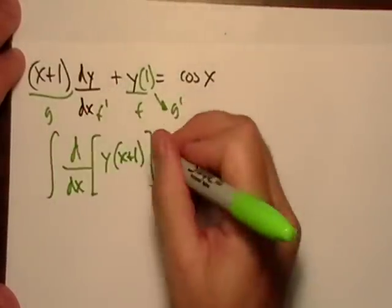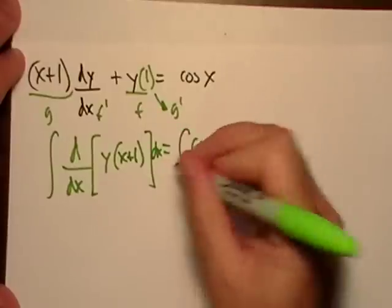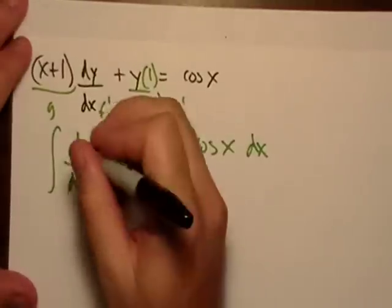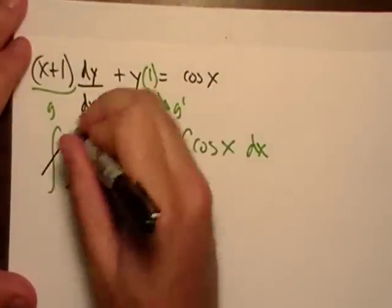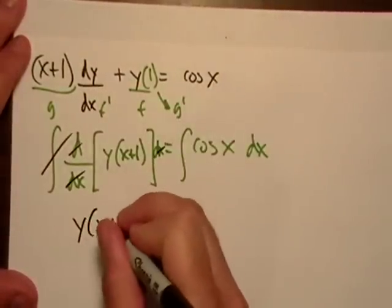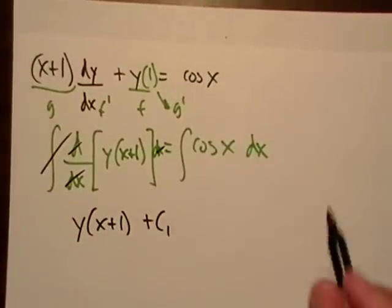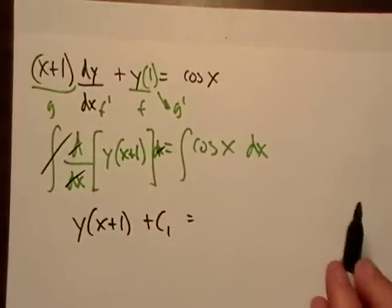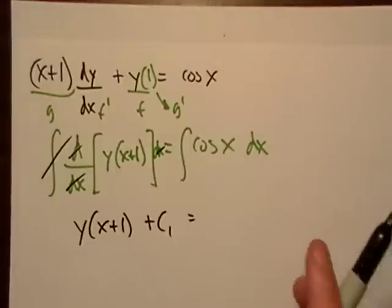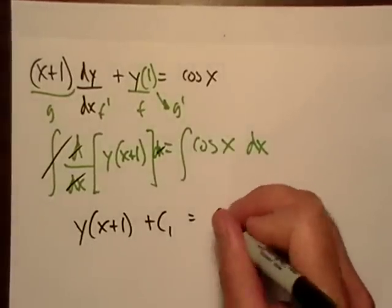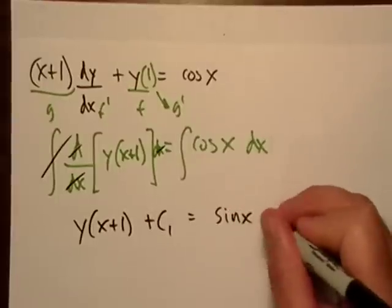So the next thing I want to do is I want to integrate both sides with respect to x. And where is that going to leave me? That will cancel out. Remember, if I integrate a derivative, it just cancels out. So I get y times x plus one. And if I take the derivative of sine, I get cosine, right? So this is just sine of x plus c two.